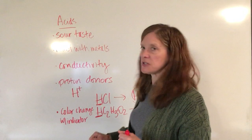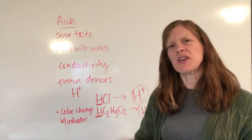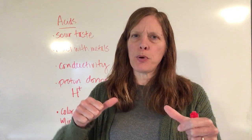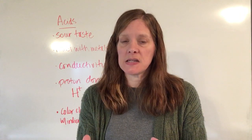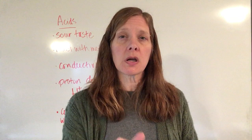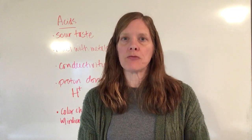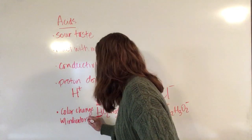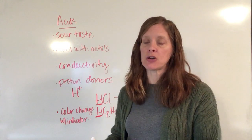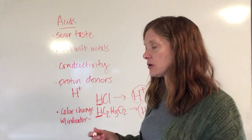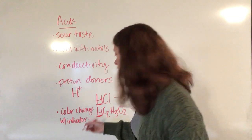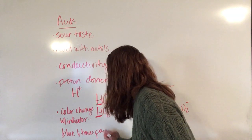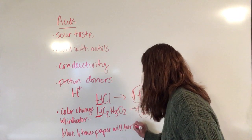If you take blue litmus paper and place it in an acid — such as pressing it against a lemon — that blue litmus paper actually turns red. Your book shows an example of blue litmus paper turning red in the presence of an acid. You'll also do a lab later where you'll see more indicators, but specifically remember: blue litmus paper turns red in the presence of an acid.